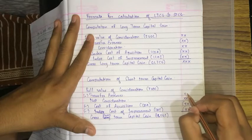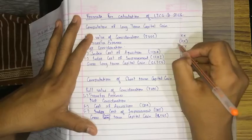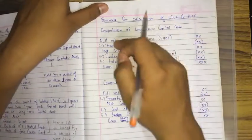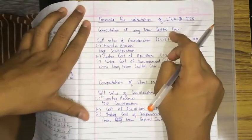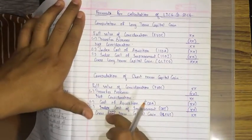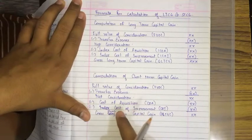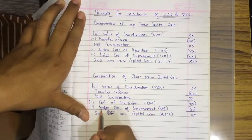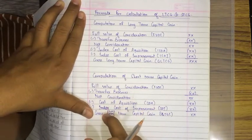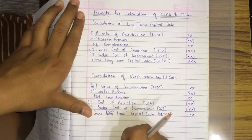Now let me explain the key difference between these two computations. In Long Term Capital Gain, there is Index Cost of Acquisition and Index Cost of Improvement, while in Short Term Capital Gain there is only Cost of Acquisition and Cost of Improvement. I made a deliberate mistake earlier so you'd remember: in short term capital gain you don't calculate index cost of acquisition.